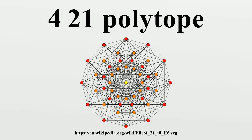H.S.M. Coxeter called it 421 because its Coxeter-Dynkin diagram has three branches of length 4, 2, and 1, with a single node on the terminal node of the 4-branch.